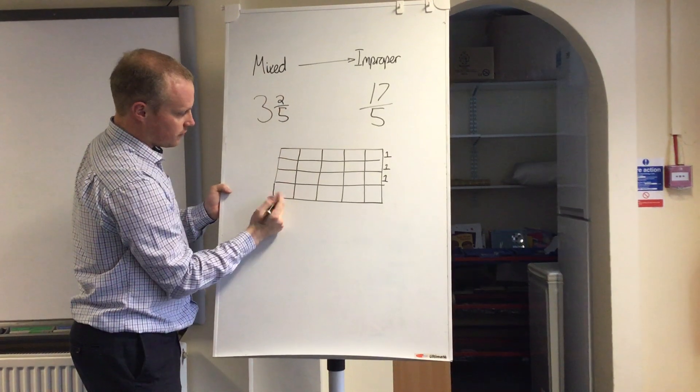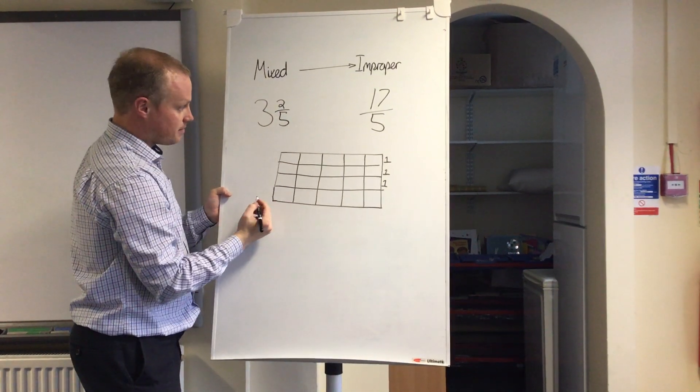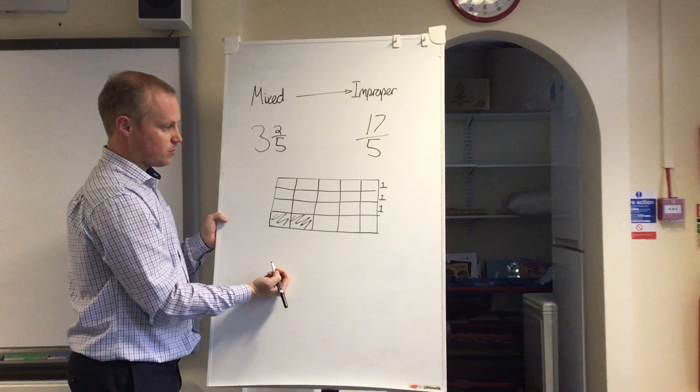And what I've got left here is 2/5. So here's my 5 parts that make the whole, and I just need 2 of them.